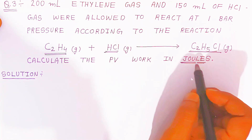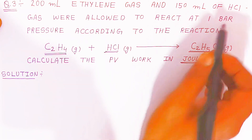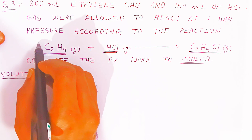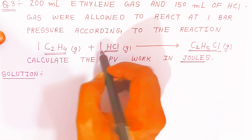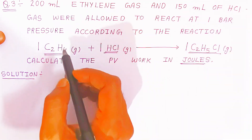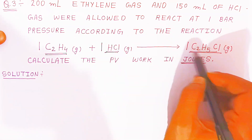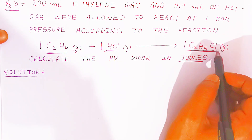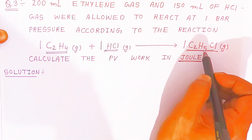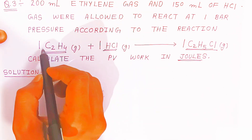So here, what is given: 200 milliliter ethylene gas and 150 ml of SCl gas were allowed to react at one bar pressure. This reaction is very important. One mole of ethylene gas reacts with one mole of SCl gas and gives one mole of ethyl chloride gas. So two volumes are going to be converted into one volume.